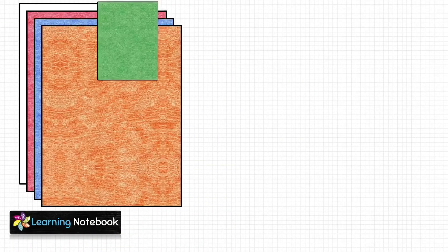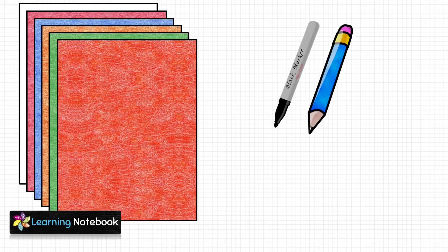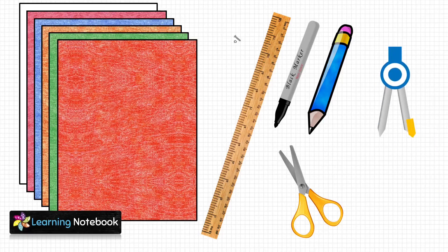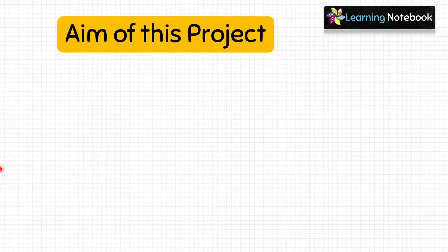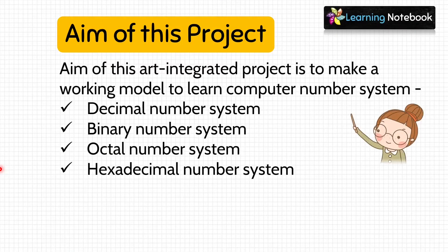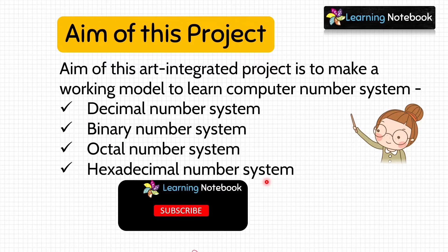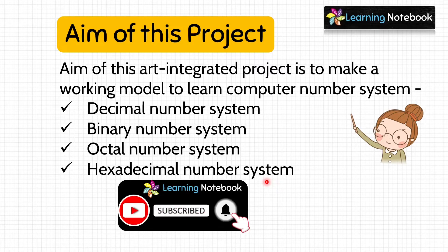For this activity we need a few colorful A4 sheets, a black marker pen, a pencil, a pair of scissors, a ruler, a compass, and a nut and bolt. The aim of this art-integrated project is to make a working model to learn the computer number system, which includes decimal, binary, octal, and hexadecimal number systems. If you haven't subscribed to our channel Learning Notebook, please subscribe and press the bell icon.